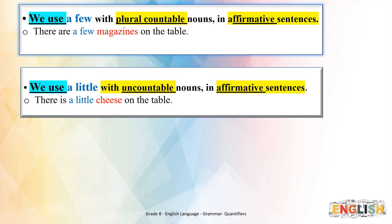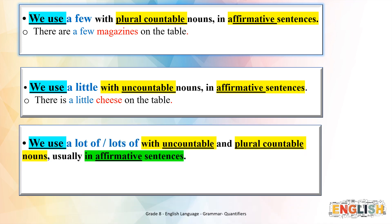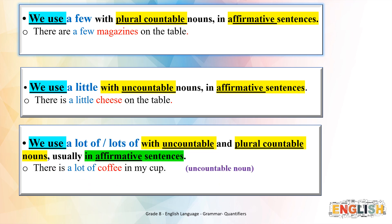Rule 5: We use 'a lot of' and 'lots of' with uncountable and plural countable nouns, usually in affirmative sentences. For example: 'There is a lot of coffee in my cup' (uncountable noun). 'There are lots of apples in the fridge' (countable noun).